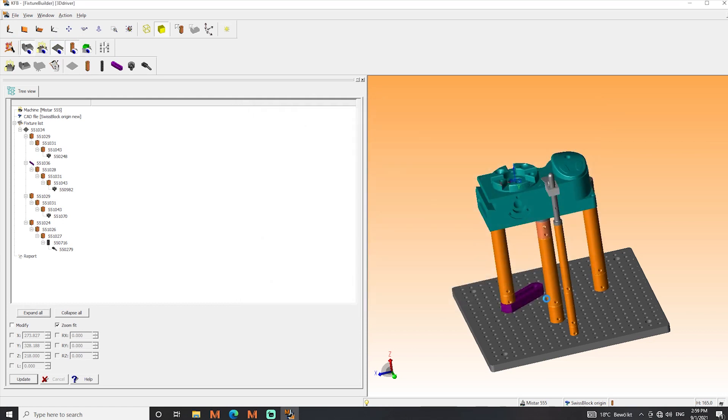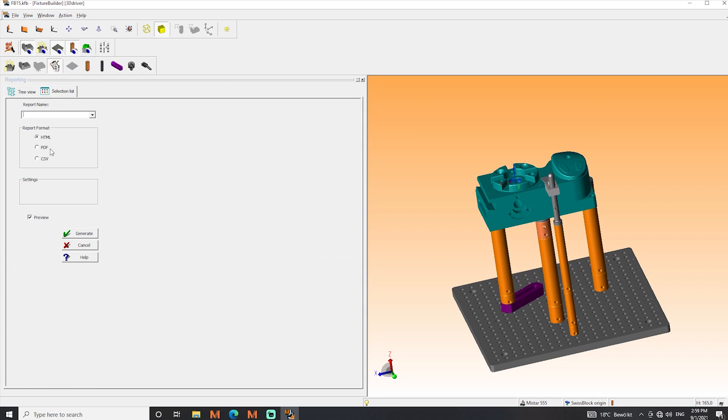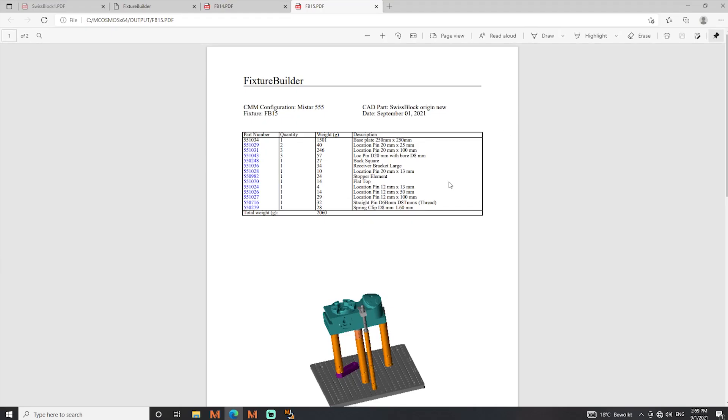Next step is to produce a report file. I choose the PDF but there is option for CSV and HTML output too. Input a name and generate the file. Here you got all the necessary information regarding part number, quantity and the description.